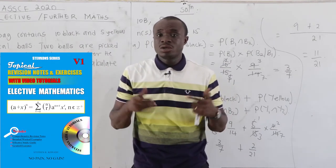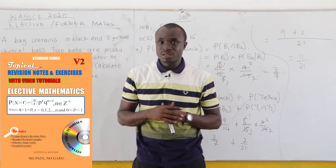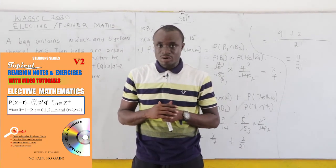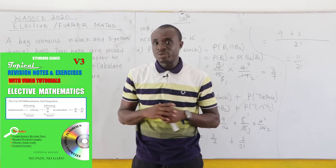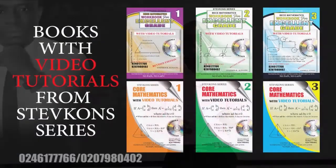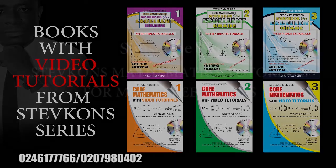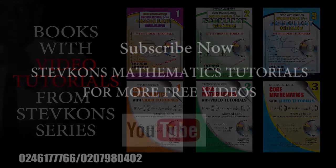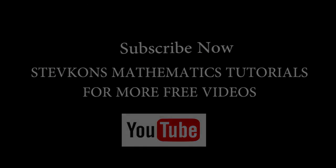This is a straightforward conditional probability problem — number of events over number of sample space, and because it is without replacement, you apply conditional probability. Please make sure that you subscribe and check out the books on the screen to get a copy for yourself.